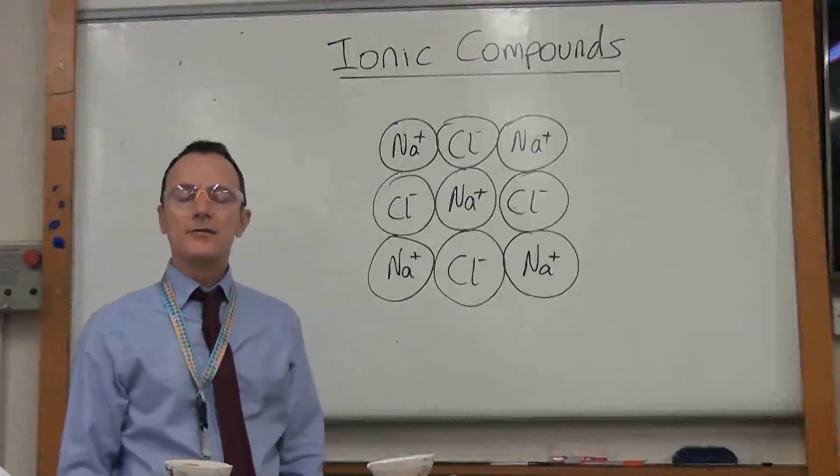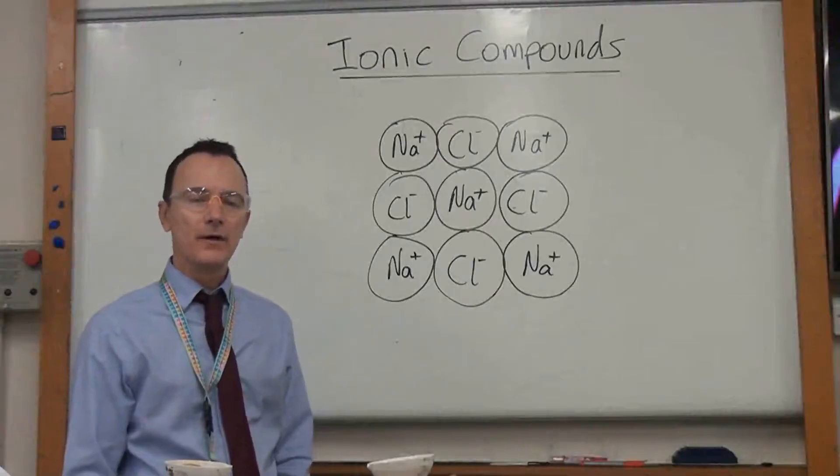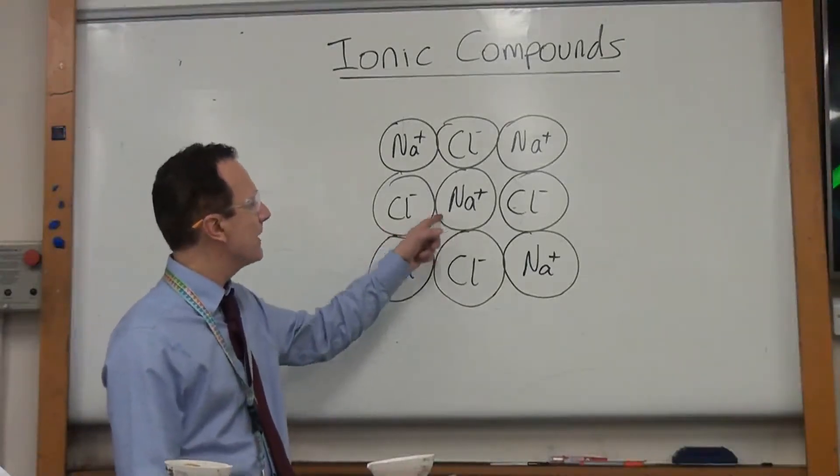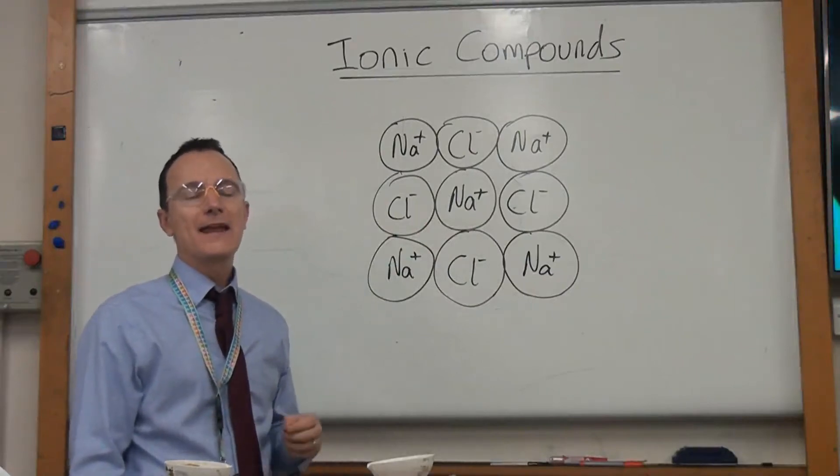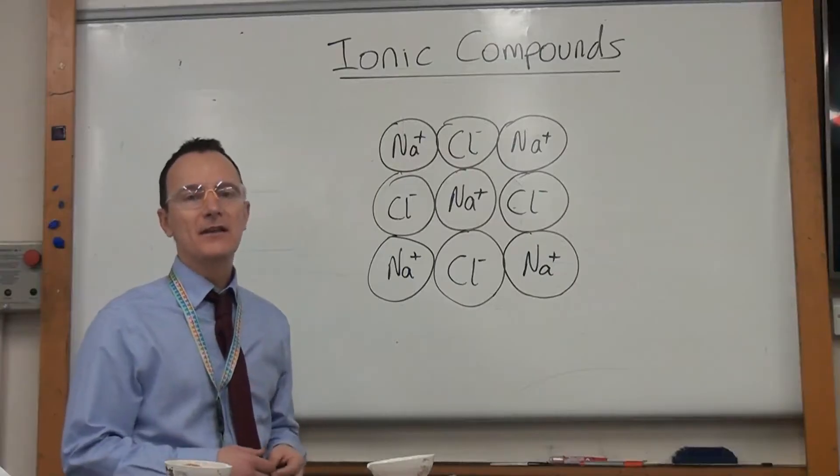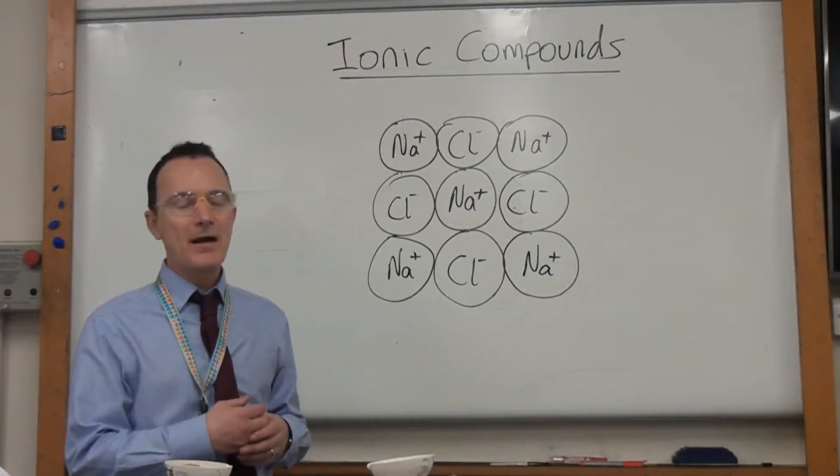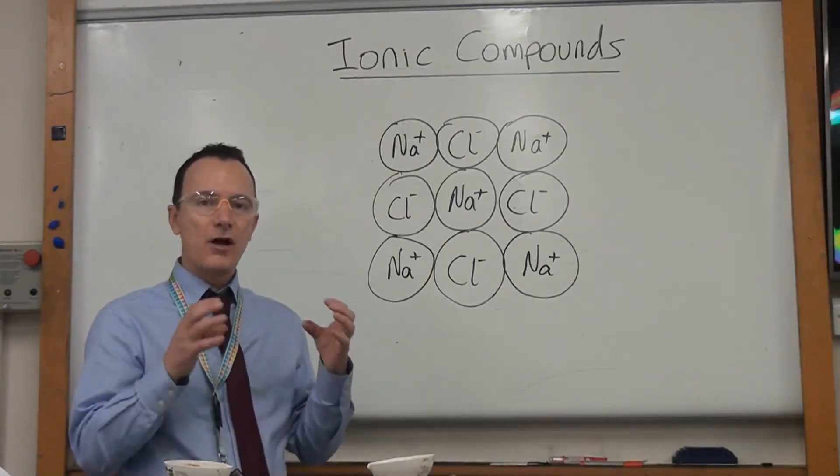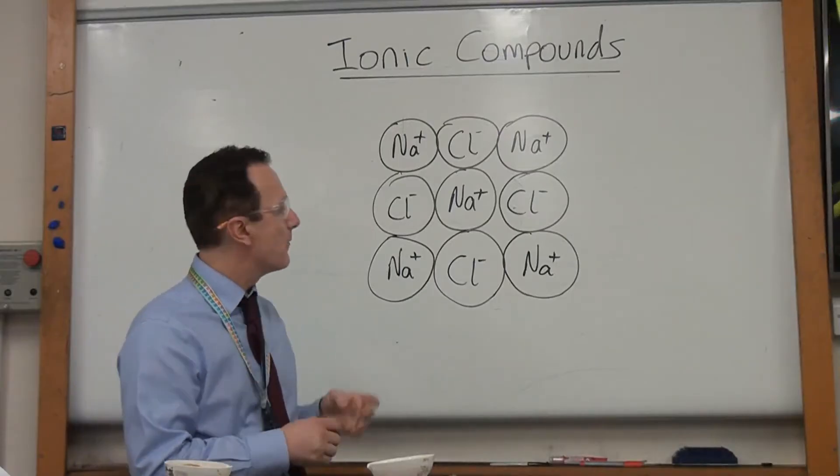Now the reason that salt and all of the ionic compounds have got a high melting point and a high boiling point is the positive and negative ions attract each other with strong electrostatic forces. So you need to put a lot of heat energy in to break apart those forces to allow the substance to melt where the ions are then free to move around rather than being stuck tightly together in that rigid structure.